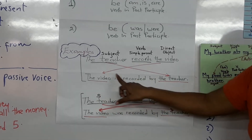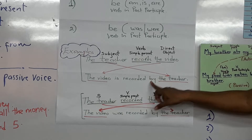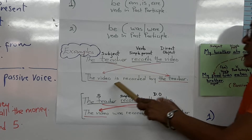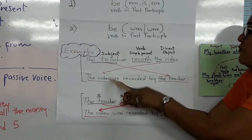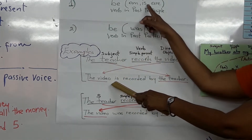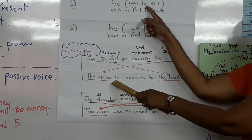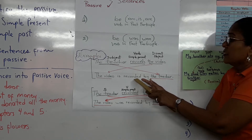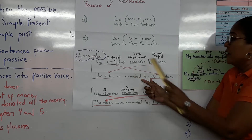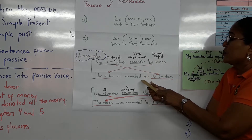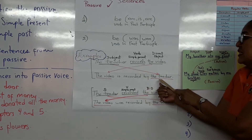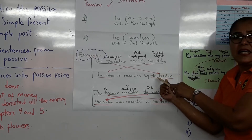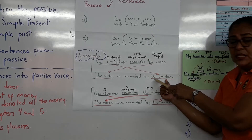The video is recorded by the teacher. 'El video es grabado por el maestro.' In the simple present we use 'is'. Since 'record' is a regular verb, the past participle takes -ed at the end: 'recorded'. We use the preposition 'by', and in this case 'teacher' is no longer the subject but the agent in the sentence.